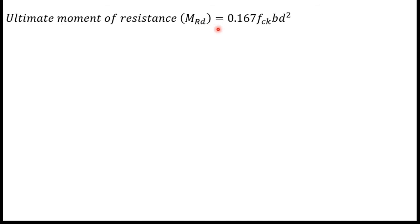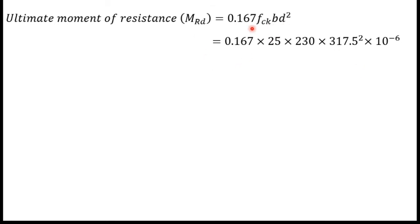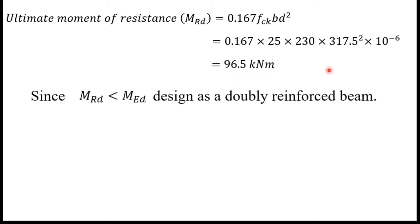Next, I can find the ultimate moment of resistance MRd using: MRd = 0.167·fck·b·d². Substituting fck = 25, b = 230, d = 317.5, with a unit conversion factor of 10⁻⁶, gives MRd = 96.5 kN·m. Since MRd is less than MEd, we have to design this as a doubly reinforced beam.